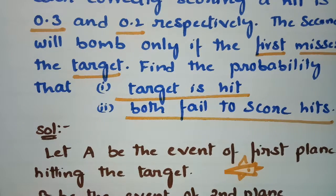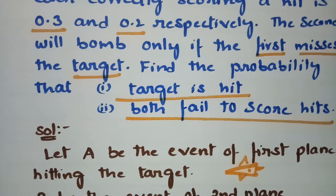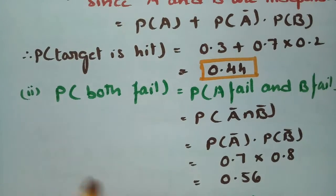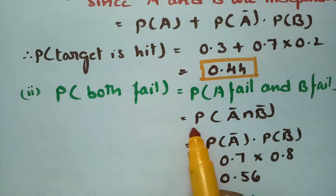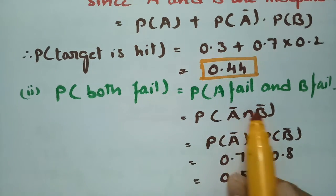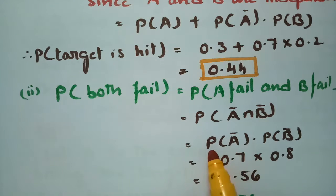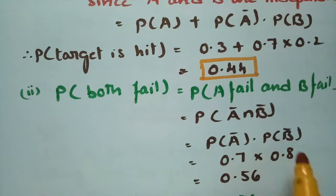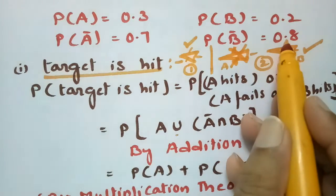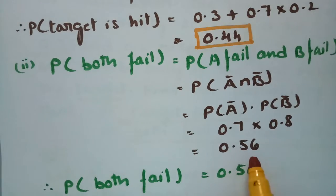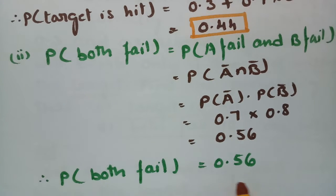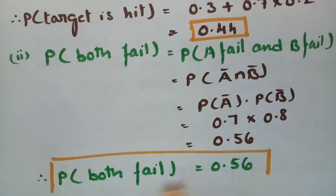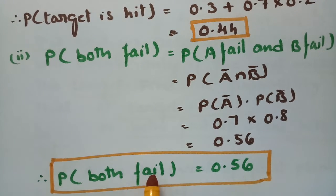For Question 2, both planes fail to score hits. The probability that both fail is P(Ā ∩ B̄). Since these are independent events, by the multiplication theorem: P(Ā) · P(B̄) = 0.7 × 0.8 = 0.56. Therefore, the probability that both planes fail to hit the target is 0.56.